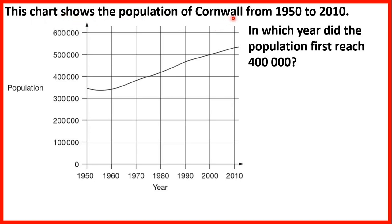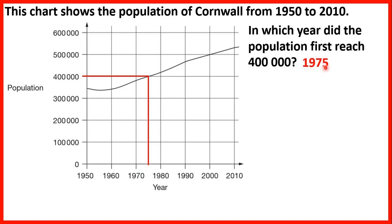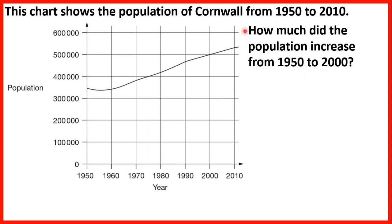This chart shows the population of Cornwall from 1950 to 2010. The population is how many people are living there. In which year did the population first reach 400,000? We find 400,000 on the population axis, draw a horizontal line across to where it meets the line chart, then draw a line straight down to the year axis. We can see it's right in the middle of 1970 and 1980, so the year must be 1975. You'd also get the mark for 1974 or 1976.